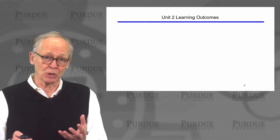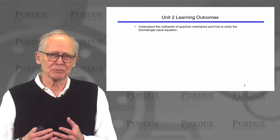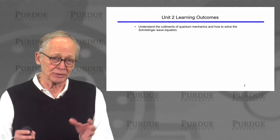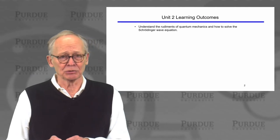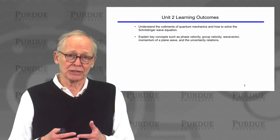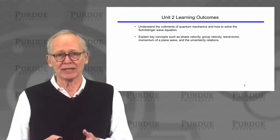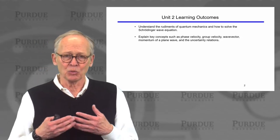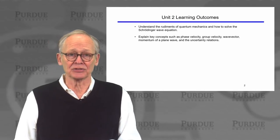To summarize what we've discussed: we tried to present a very rudimentary introduction to quantum mechanics. Some of you have already seen more than we've discussed here, including an understanding of what the Schrödinger wave equation is and how we solve it. Electrons are both particles and waves. There were some important wave concepts having to do with phase velocity, group velocity, wave vector, momentum of a wave, and uncertainty relations.